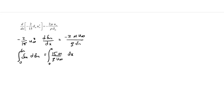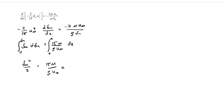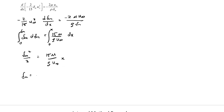Solving this: δ_m²/2 = 15μ/(ρu_infinity) · x. So δ_m = √(30μx / (ρu_infinity)). We've derived an expression based on our velocity distribution for the boundary layer thickness as a function of position x. This looks a lot like things we've seen before. Let's compare it to the known exact solution.